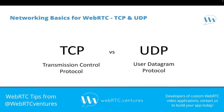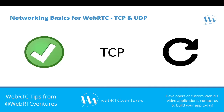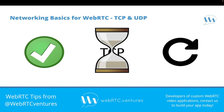In networking, something similar happens with the transportation of data packets. The two main ways to deliver a packet are using Transmission Control Protocol, or TCP, and User Datagram Protocol, or UDP. TCP is focused on guaranteeing delivery. This means that it will perform additional checks that guarantee a packet is correctly transmitted and following the right order. This makes TCP reliable, but sometimes slow.